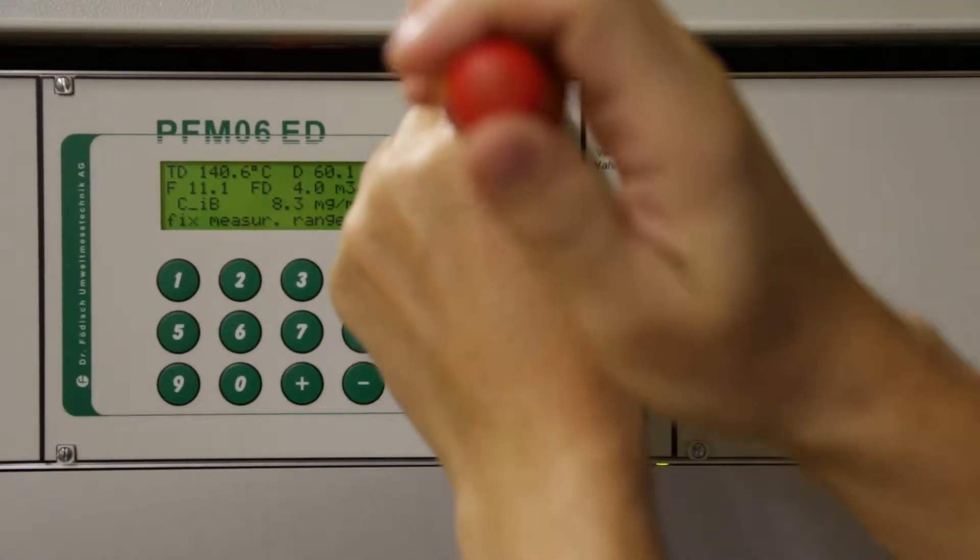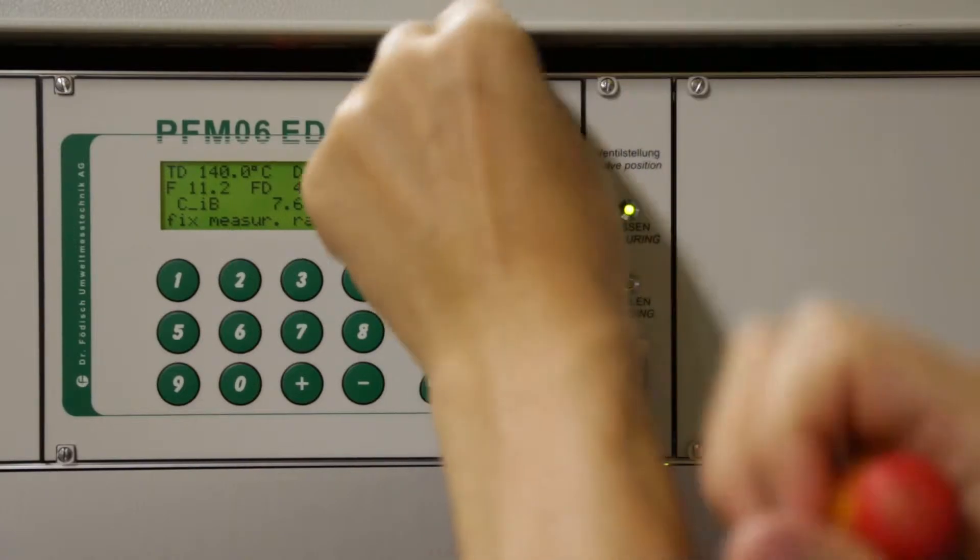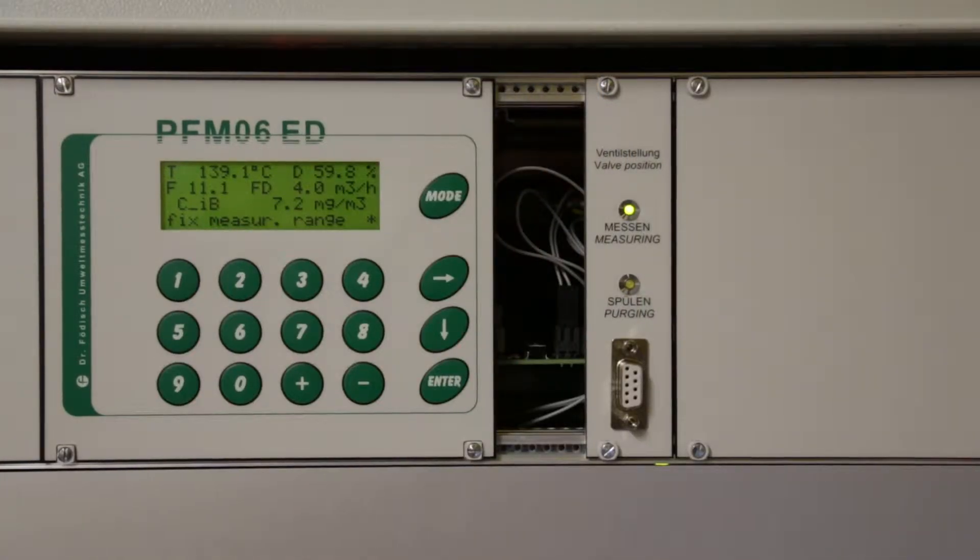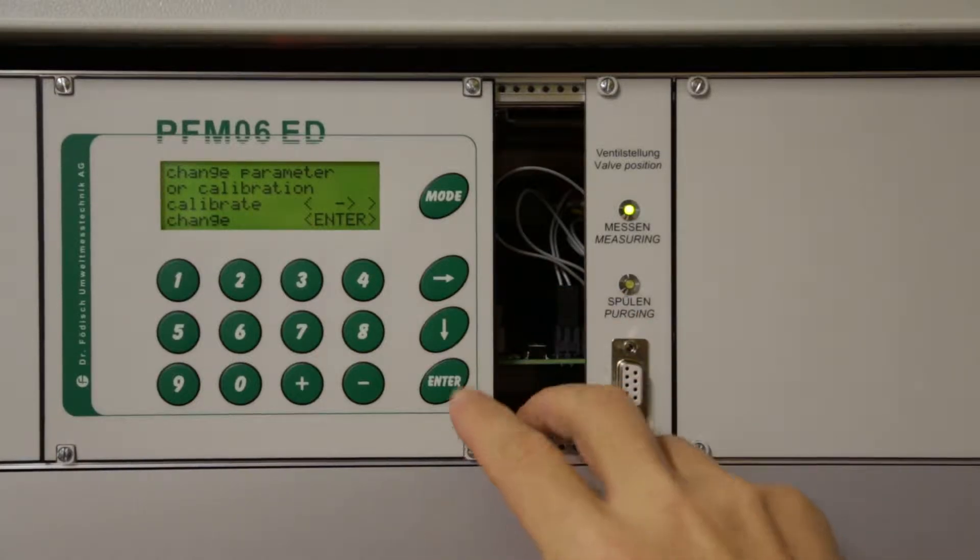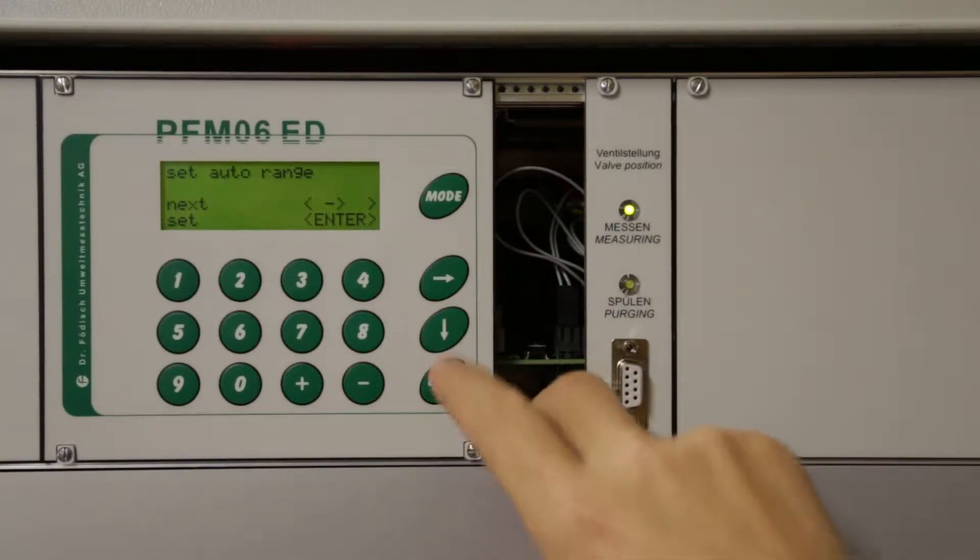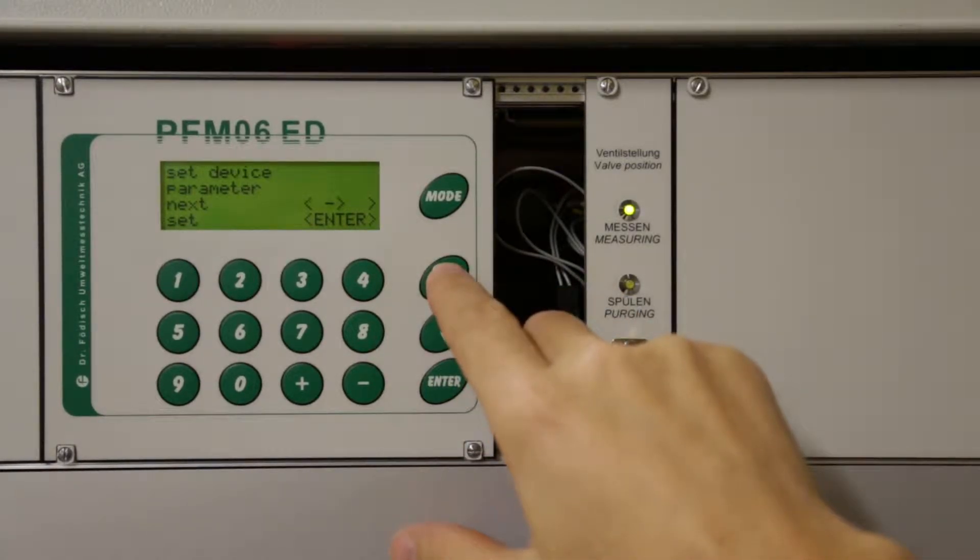In order to check or change the settings of PFM-06ED, remove the cover next to the display and press the button inside. You can change the settings with the control keys. Here you can also enter the calibration factors after a gravimetric reference measurement.